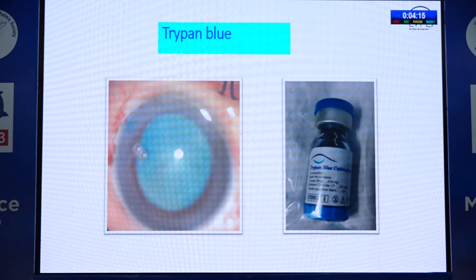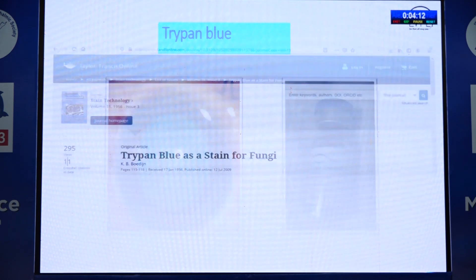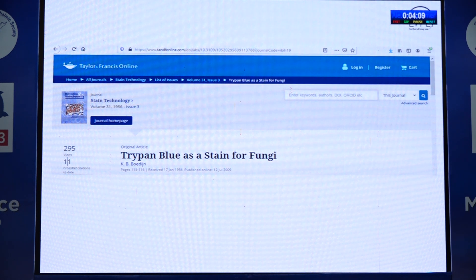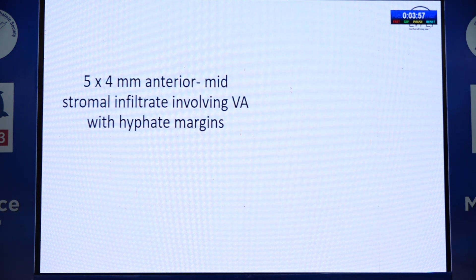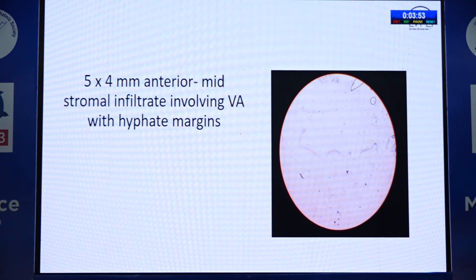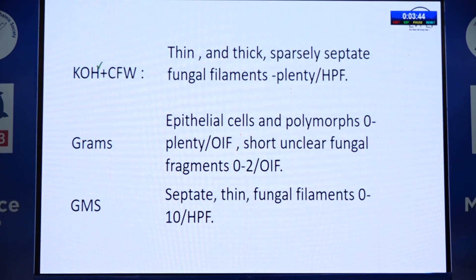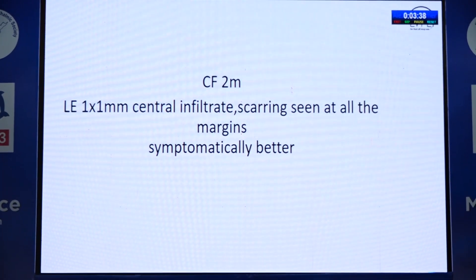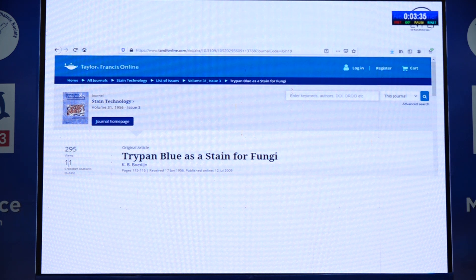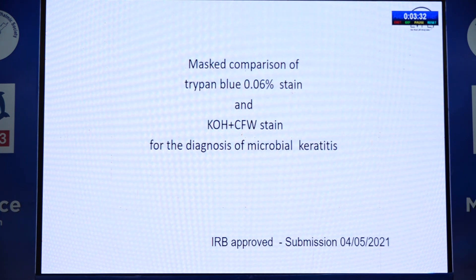During COVID, at one of our rural centers, a patient presented with two months of symptoms and an infiltrate, without KOH available. We did trypan blue staining and could see fungal filaments. The patient was later referred and fungus was confirmed, and she was treated with antifungals. This led us to do a formal comparison of trypan blue with KOH and calcofluorite white stain for diagnosis of microbial keratitis at a tertiary center.